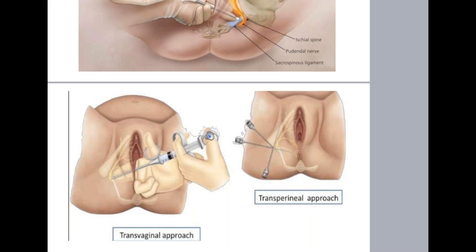The complications of pudendal nerve block include: vaginal laceration — if the patient is uncooperative and continuously pushing in the second stage of labor, she may move, causing injury to the operator, the baby, or the vagina itself. Another complication is intravasation of local anesthetic, which causes palpitation, dysarthria, drowsiness, confusion, loss of consciousness, hypertension, and bradycardia — a serious and potentially life-threatening complication.